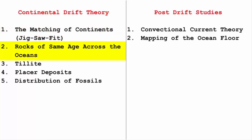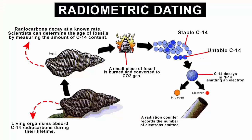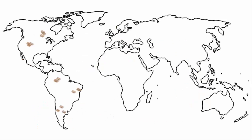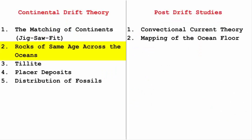The second point in continental drift theory talks about the fact that rocks from different continents were of the same age, and this made Wegener believe that the land masses were once together and slowly drifted away. Again, the reason behind the drifting is much deeper than just looking at rocks and saying they are all the same.